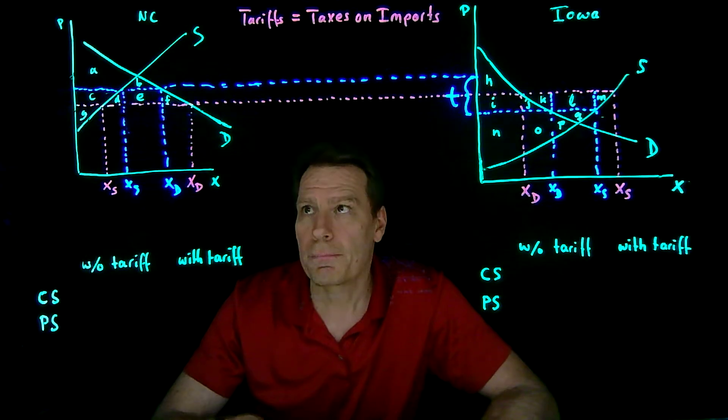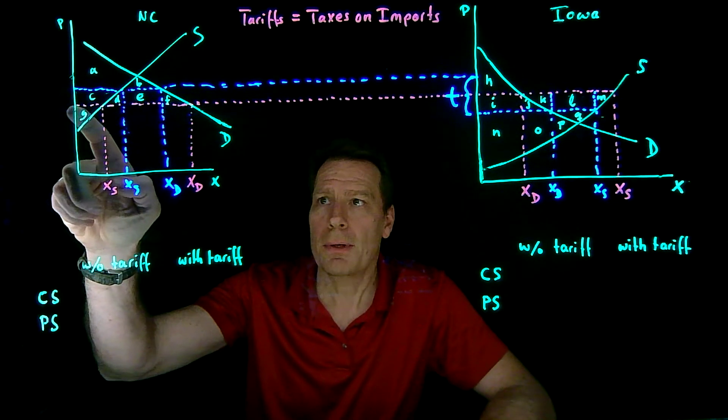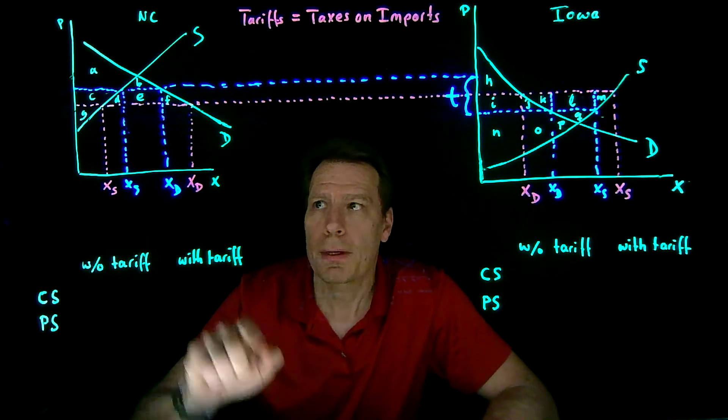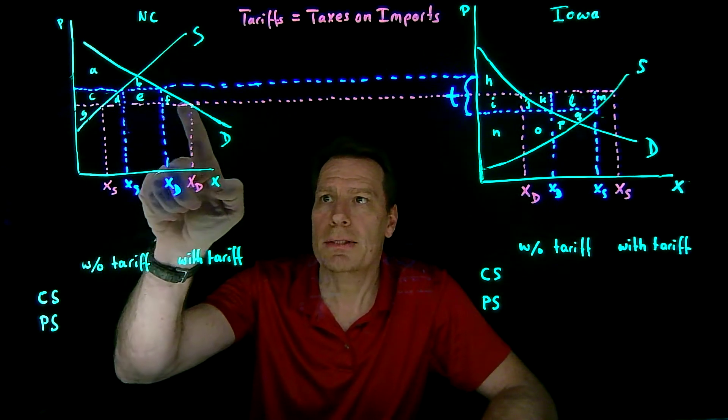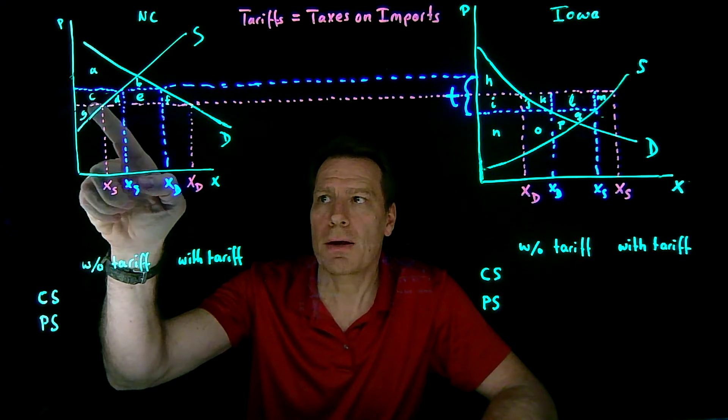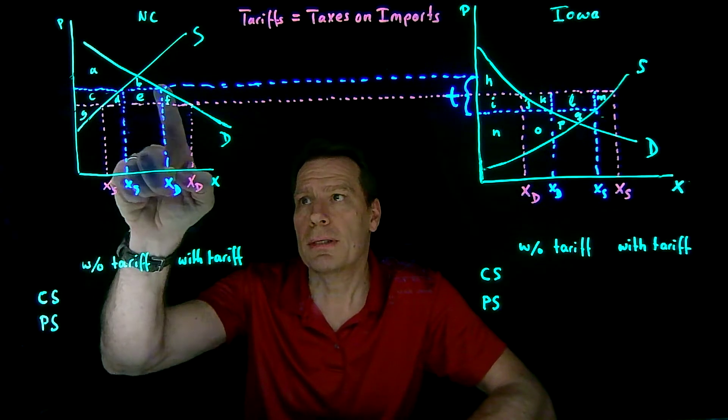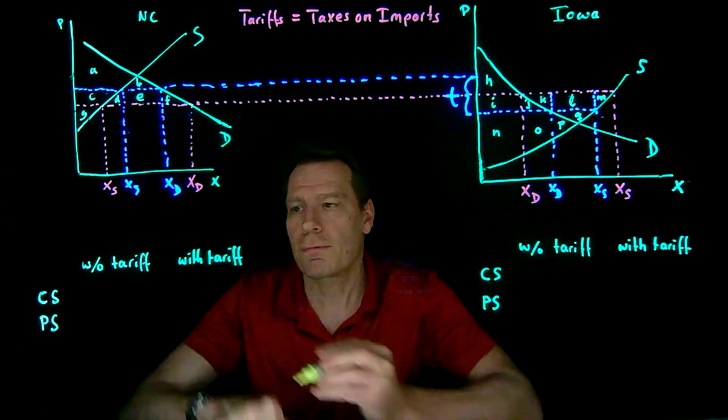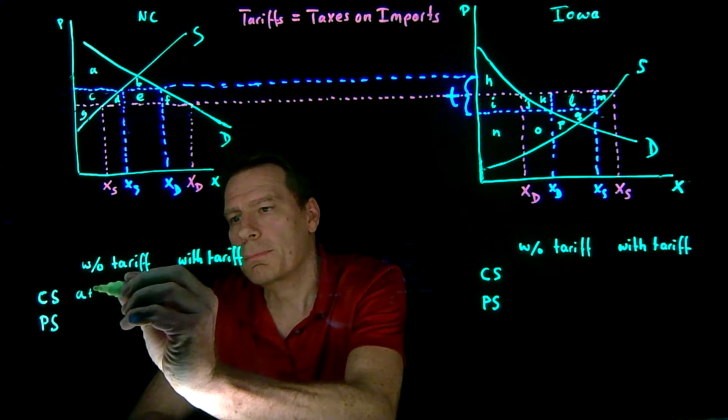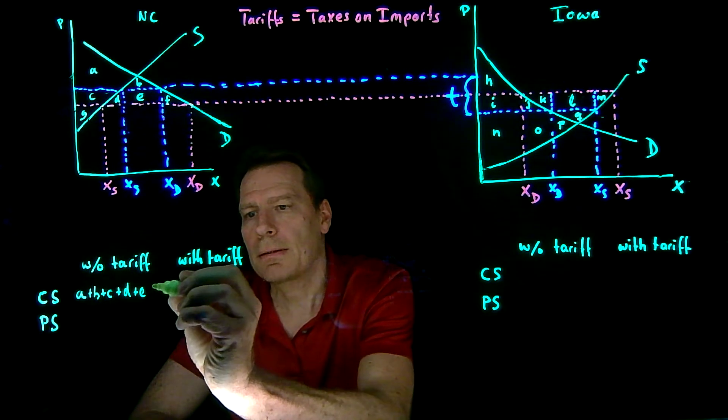So let's start with North Carolina. Initially, before the tariff, the magenta price was the price across both North Carolina and Iowa. So consumers paid that price and bought this large quantity. So they got a consumer surplus of everything above the magenta line up to the demand curve, which is A, B, C, D, E, and F. So A plus B plus C plus D plus E plus F.